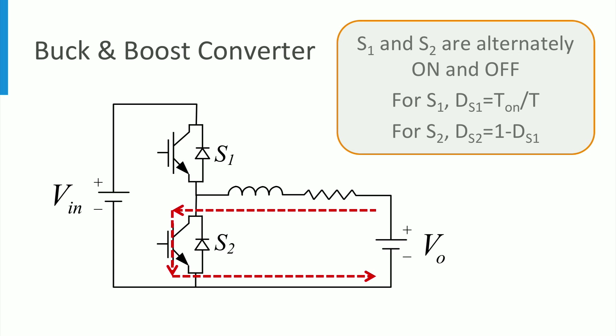If S2 is conducting, the energy is stored in the inductor. When S2 is off, the diode of S1 takes the current over and delivers energy to the higher voltage level V_in.